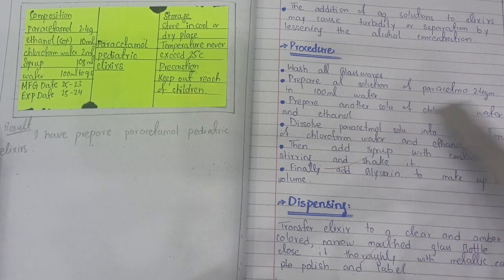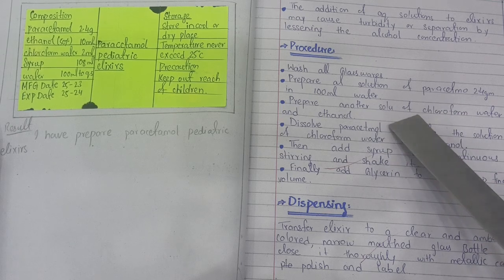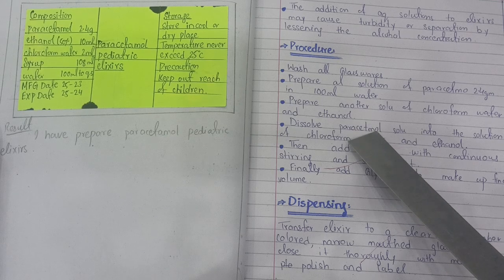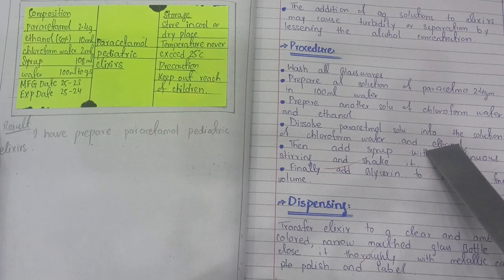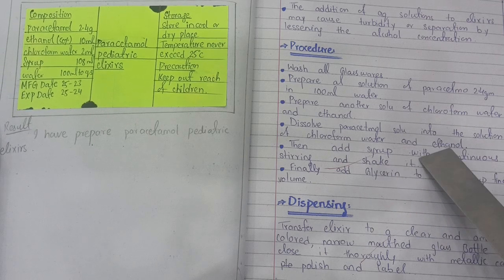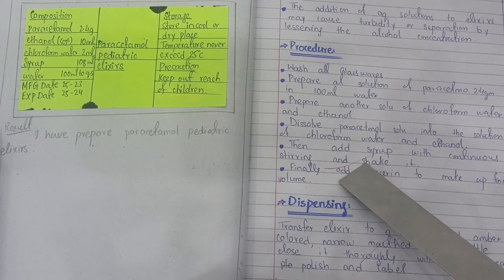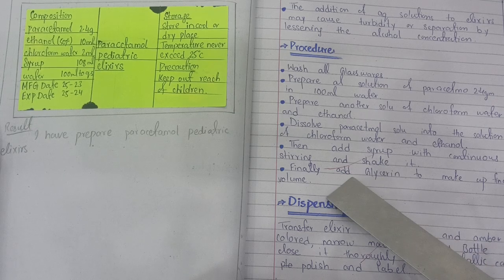Take 100 ml of water and dissolve 2.4 grams of paracetamol to get a solution. Then prepare chloroform spirit by combining chloroform water and ethanol. Mix both solutions together, stir, and shake because there may be turbidity — you will need to shake it well.